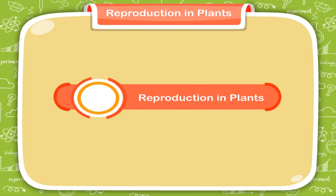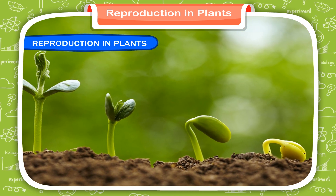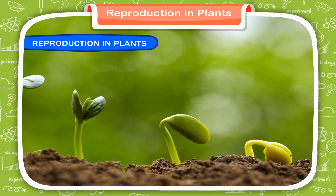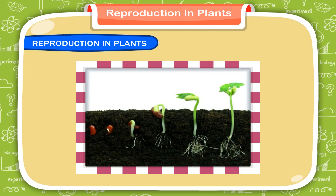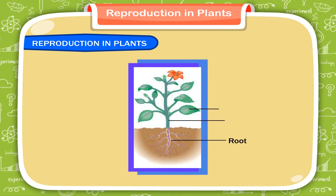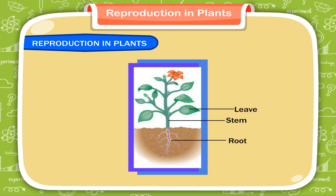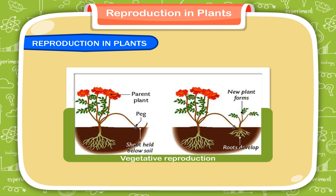Reproduction in Plants. Like animals and human beings, plants also reproduce to ensure the continuation of the species. They reproduce in many ways. Most of the plants grow from their seeds. There are some plants that reproduce from different parts like the roots, stems or leaves. These plants are able to grow without seeds. The process by which the different parts of a plant grow into a new plant is called vegetative reproduction.